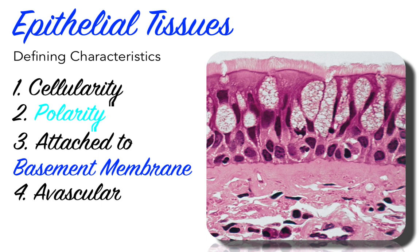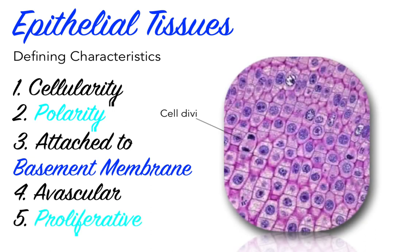Blood vessels do not run into epithelial tissues. This avascularity is quite distinct from connective tissue, which is highly vascular. Because they are avascular, epithelia must get their nutrients from blood vessels in deeper supporting connective tissues, or by absorbing them through their exposed apical membranes. Fifth and finally, epithelial tissues are highly proliferative — they contain cells capable of division. For this reason, epithelial tissues can regenerate and repair themselves when damaged, which is quite distinct from muscle cells, neural cells, and some connective tissue cells that display very low proliferative capacity.